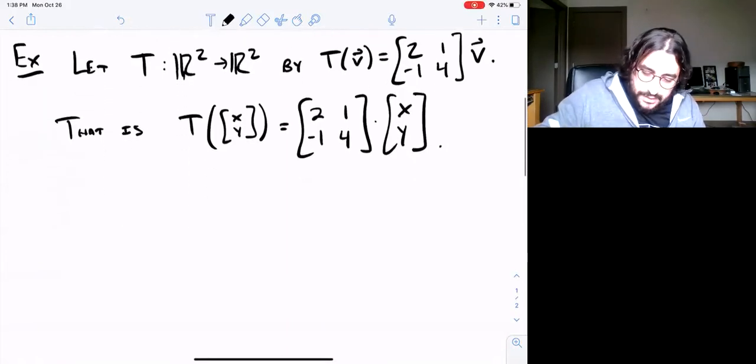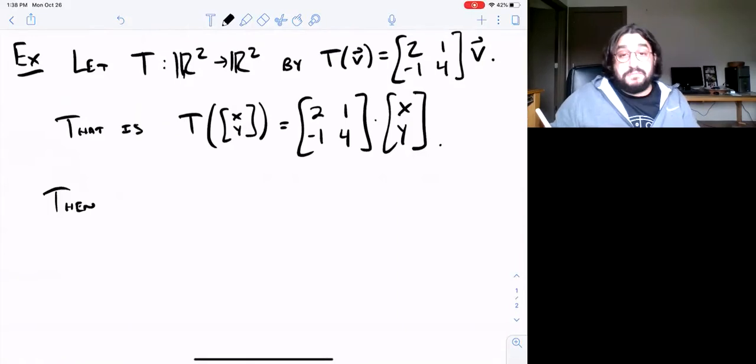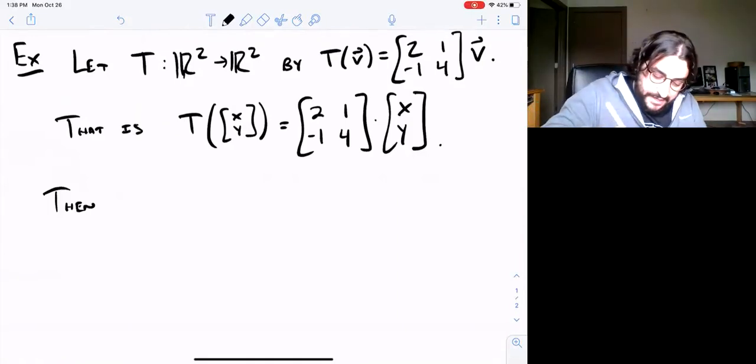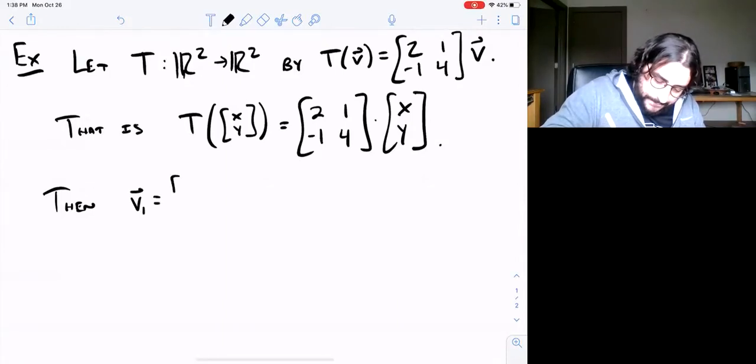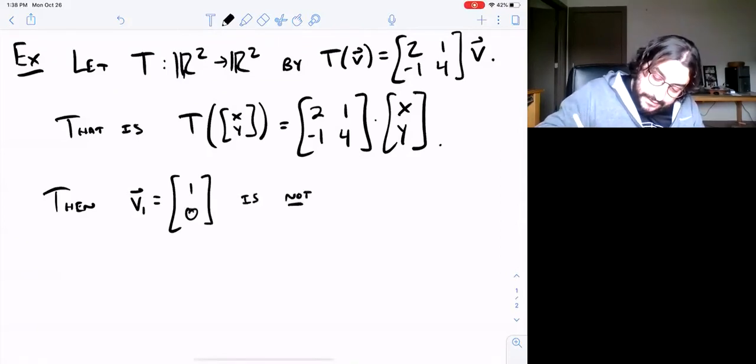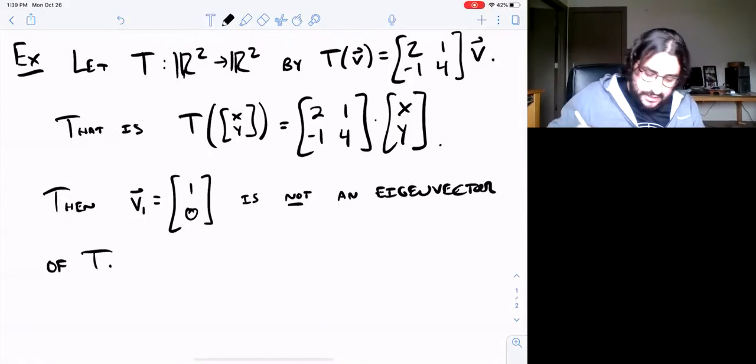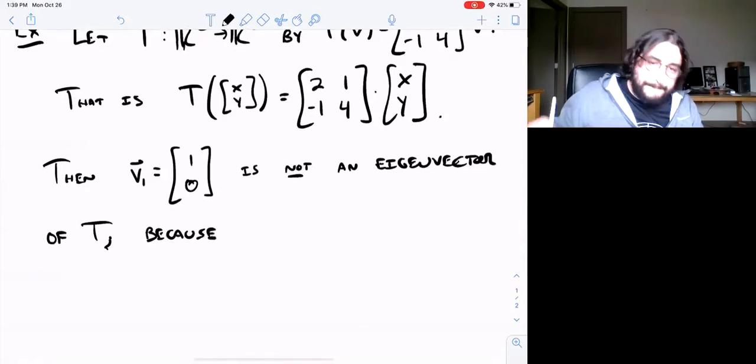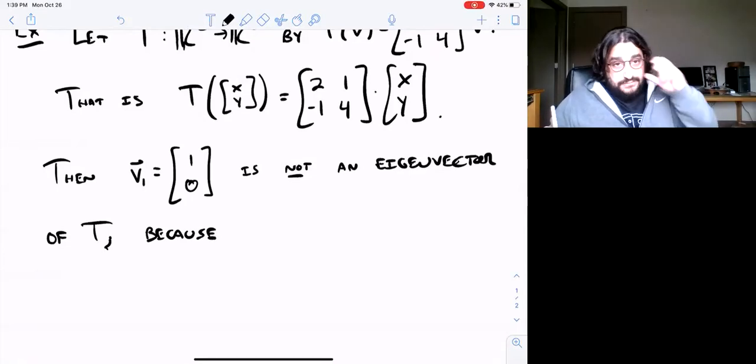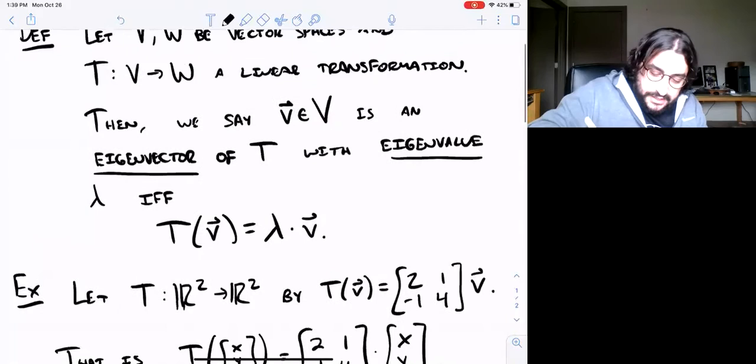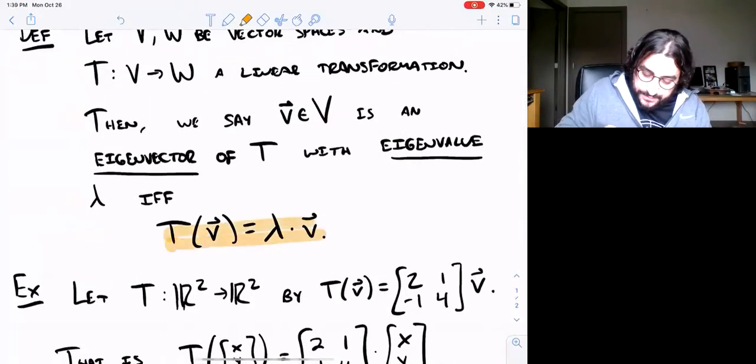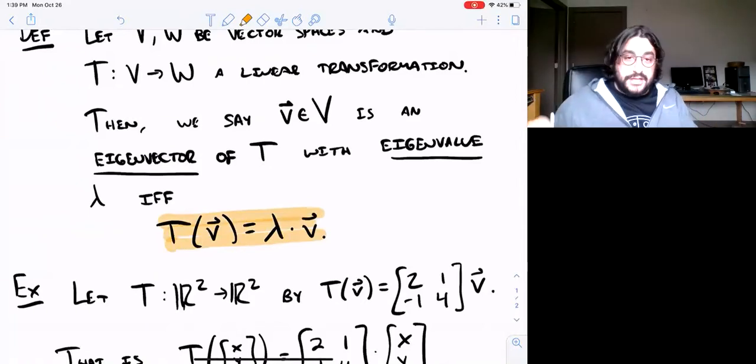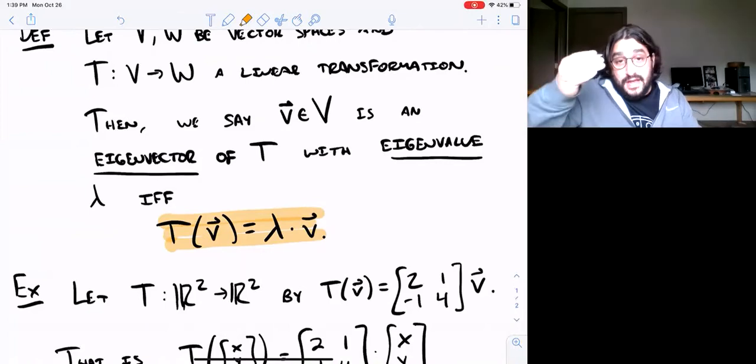So here you could just pick a vector and I'm just going to pick one kind of at random. I'll pick say the vector (1, 0). I claim that this is not an eigenvector of T, and the reason is because that vector v simply does not satisfy the defining equation, what it means to be an eigenvalue/eigenvector. This is the defining relation that defines a vector to be an eigenvector with eigenvalue lambda.